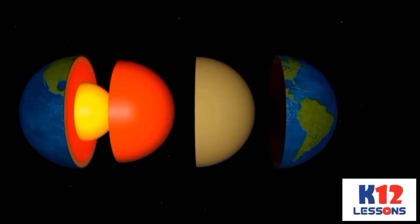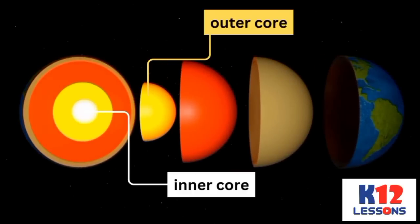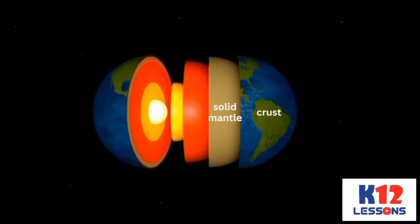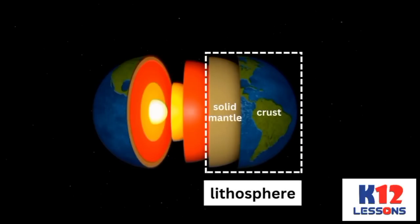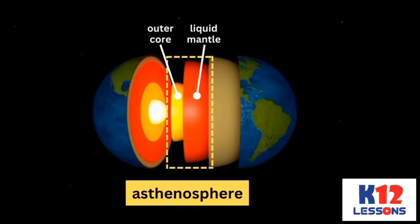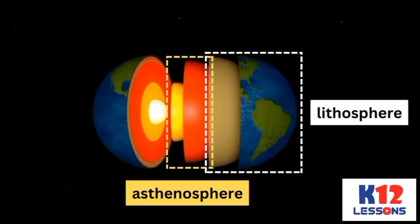The third layer is the core, which is divided into two layers: the outer core and the inner core. The outer core is liquid, while the inner core is solid. The crust and the solid upper part of the mantle make up the lithosphere. The liquid part of the mantle and the outer core is the asthenosphere. The lithosphere floats in the asthenosphere.